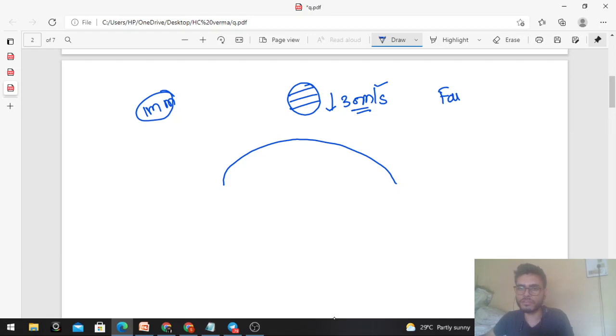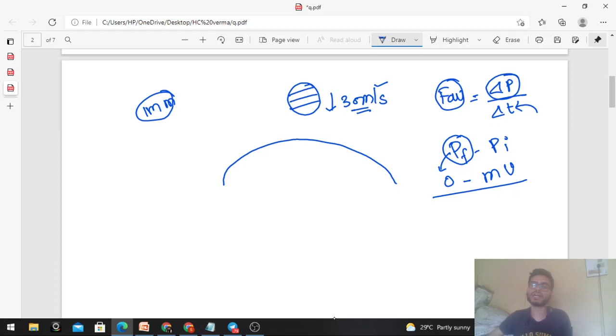If average force is asked, what is the average force exerted by the head of the person on the raindrop? It's the total change in momentum divided by total time. Change in momentum: final minus initial. Final momentum is zero because finally the raindrop is at rest, minus initial momentum, which is mass into velocity. Mass is 4 mg, initial velocity is 30 meter per second, divided by the total time.